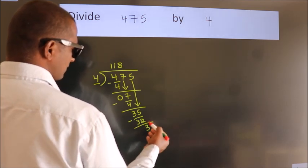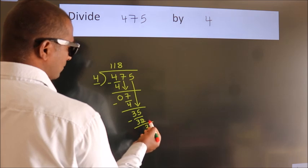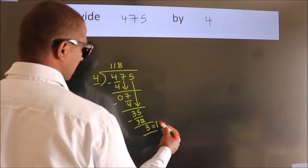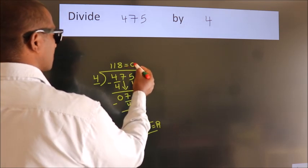After this, no more numbers to bring it down. So we stop here. This is our remainder. This is our quotient.